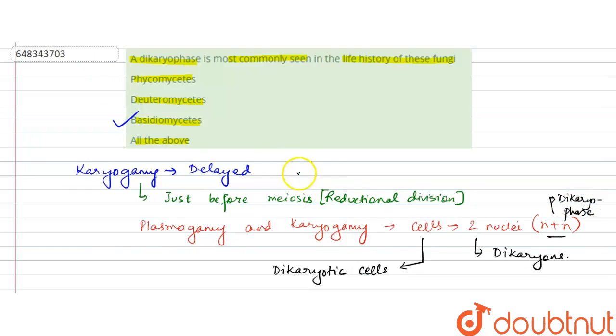So that happens where? We find that in Basidiomycetes, which is a class of fungi. It does not happen in Phycomycetes, not in Deuteromycetes, and not all of the above—only Basidiomycetes. Thank you.